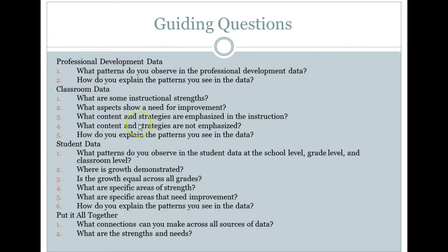Next is classroom data. Typically when you think of classroom data you think of student performance, which this incorporates as well, but this is more observational data of teacher effectiveness and instructional quality in the classroom. What are some of the strengths of instruction? What areas show a need for improvement? What content and strategies are emphasized or not emphasized? How do you explain the patterns you see in the data? So this is really looking at the quality of instruction, which is very important.